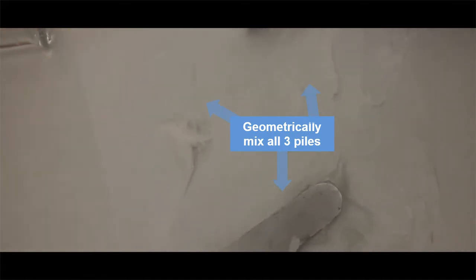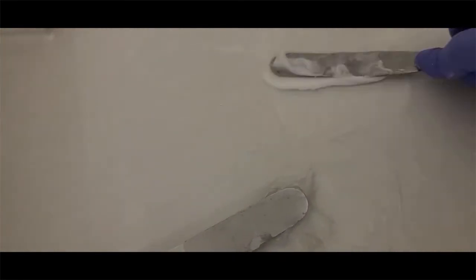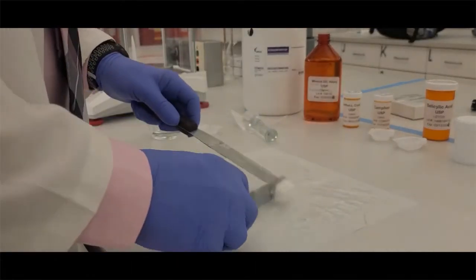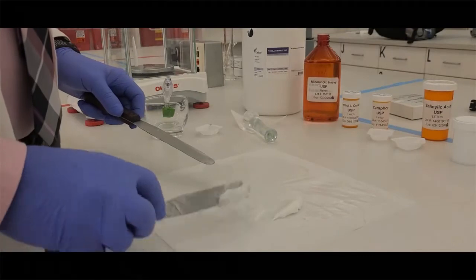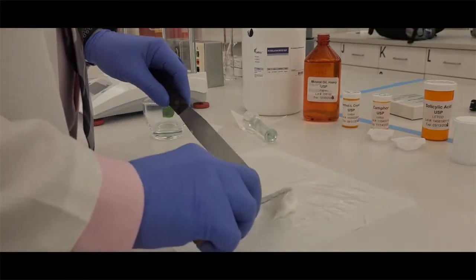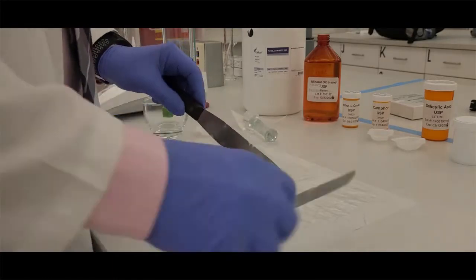My goal here is to geometrically mix all three of these piles into one uniform mixture. So you're going to see me do that here. I'm going to be taking those two piles of the salicylic acid and the eutectic and mixing those together. And once I get that, I'm going to start to incorporate a little bit of that ointment, about the same exact size as the mass that I have originally.